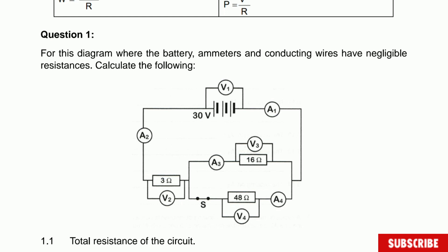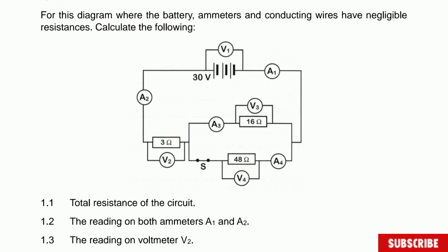The question says: for this diagram, where the battery, ammeters, and conducting wire have negligible resistance, calculate the following. The first thing they ask is the total resistance of the circuit. In this case we have three resistors — one connected in series with a parallel part, where the current splits in two because they share a common terminal, and then these two resistors are in parallel.